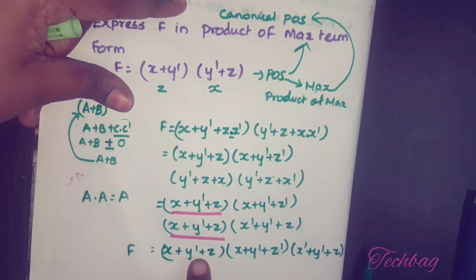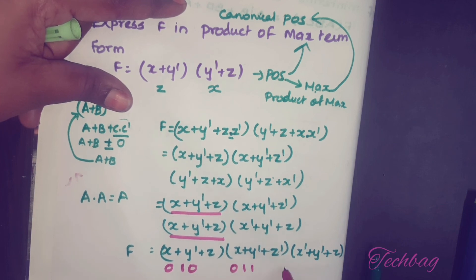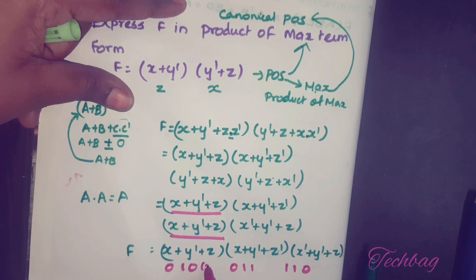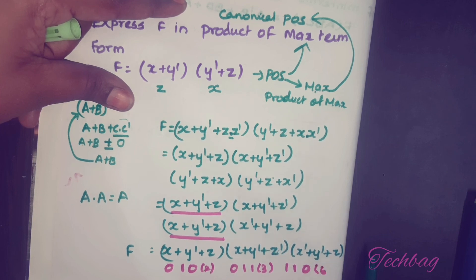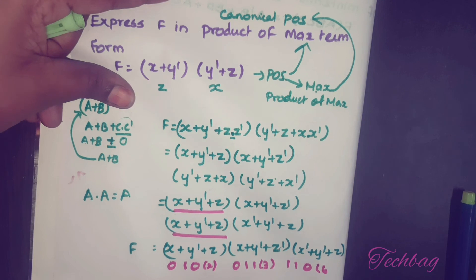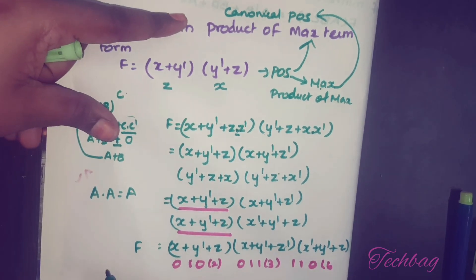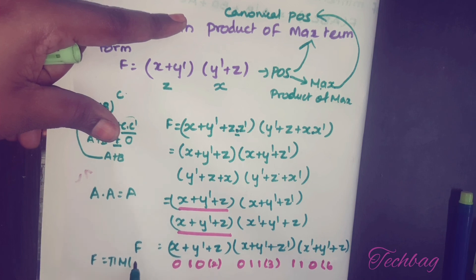To write this using maxterm notation, find the binary value for each max term. In a sum term, 1 represents the complemented variable and 0 represents the true variable. So (x plus y' plus z) gives 0,1,0 = 2; (x plus y' plus z') gives 0,1,1 = 3; and (x' plus y' plus z) gives 1,1,0 = 6. Therefore f equals Product of Maxterms M(2, 3, 6).